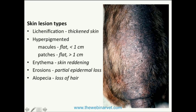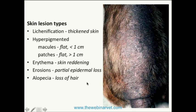There are discrete areas of hyperpigmentation. Dermatologists call these macules when they're flat, discolored, and less than a centimeter, or patches when discoloration is flat and greater than a centimeter. There's also erythema and erosions present at the tail head, and extensive alopecia on this patient.